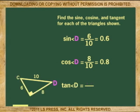For angle D, we'll reverse the values so the sine of angle D is 0.6, and the cosine of angle D is 0.8. The tangent of angle D is the reciprocal of the tangent of angle C, or 6 over 8, or 0.75.